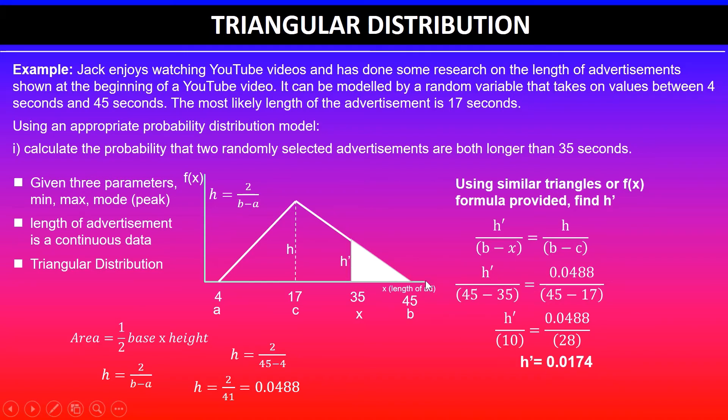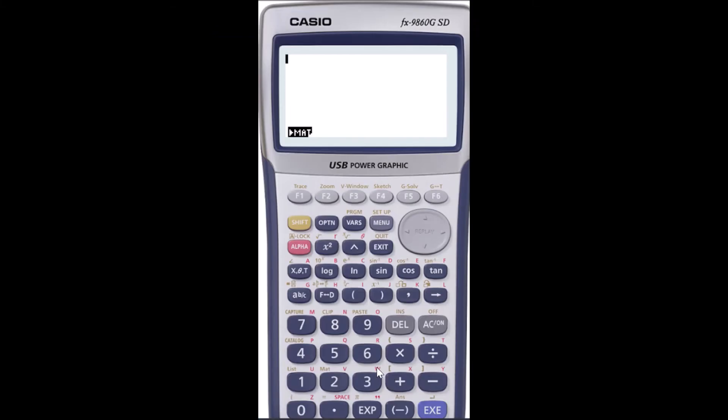Now once I've found that, remember this is not the probability, this is the height of the triangle that you have got there. Then I will use half the base times height to find the area. In this case base is between 35 and 45, so it goes in there times the height which we calculated.